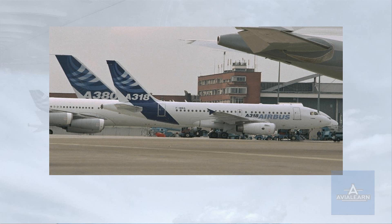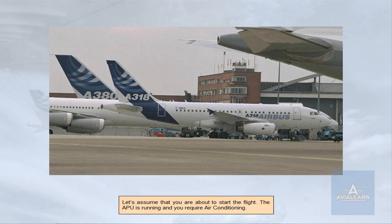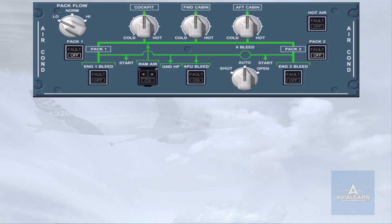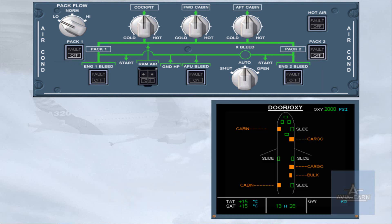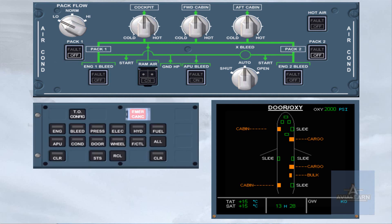Let's assume that you are about to start the flight. The APU is running and you require air conditioning. You are now in the cockpit, and this is how you find the air conditioning panel during your scanning sequence. Notice that, except for the off lights on the two-pack push-button switches, all other push buttons are in the normal lights-out position. One step of the cockpit pre-flight check is to extinguish all white lights on the overhead panel so that you can watch what is happening. Let's have a look at the ECAM bleed page.